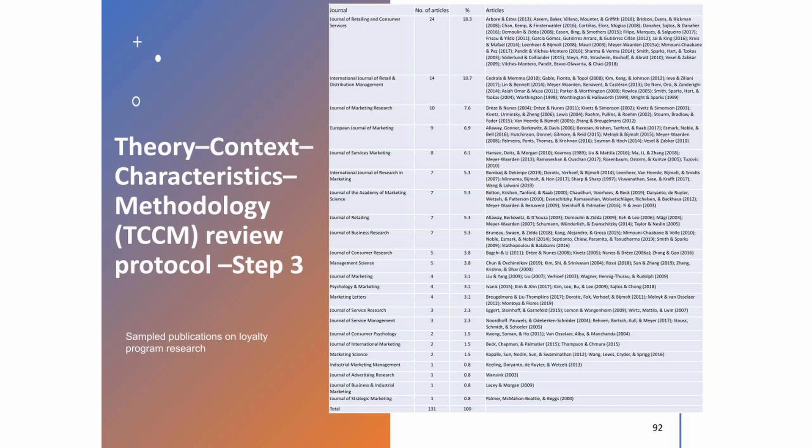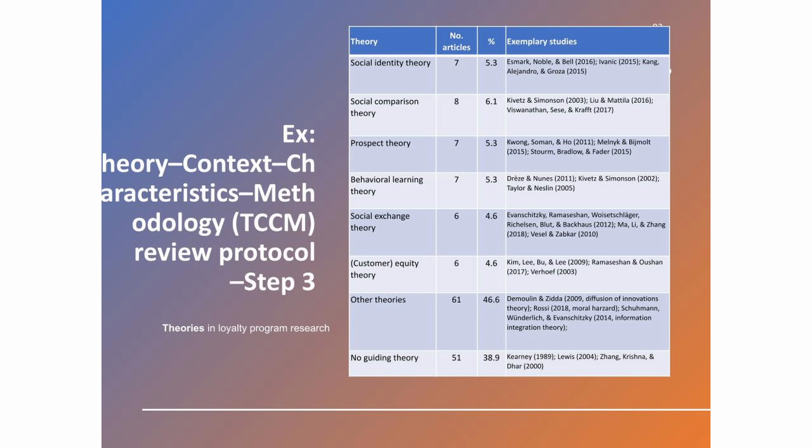This is the first table generated by the TCCM protocol. The second table is then the main table about theories which are used. For example, in our research on loyalty programs, we identified mainly articles using social identity theory, social comparison theory, prospect theory, behavioral learning theory, social exchange theory, and customer equity theory. There is also a large number of articles using other more marginal theories. Most theories are based on social exchange and social identity theories, which are well-established social science theories. But if you want to make a contribution, it also makes sense to use new theories that have not been previously investigated.